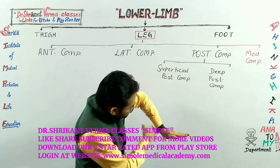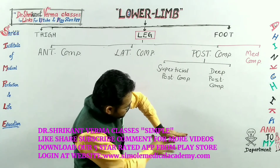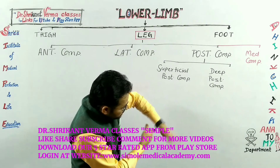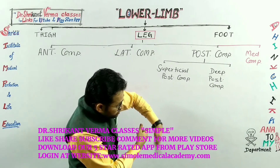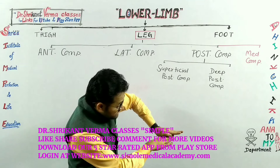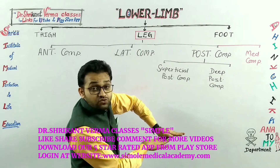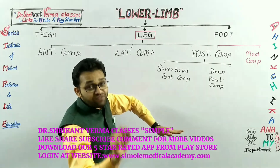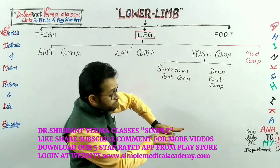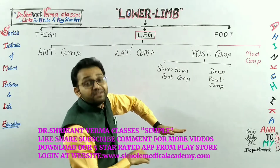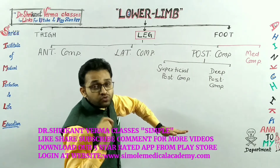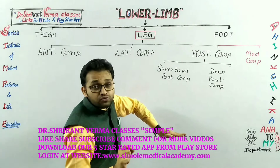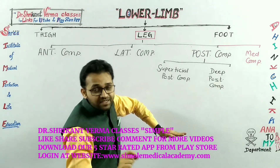The muscles of the posterior compartment, when they contract, will pull the foot downward. So the plantar angle is getting decreased. That is why this is known as plantar flexion, or simply flexion. That is why the muscles of the posterior compartment are also known as flexor muscles, and this compartment is also known as the flexor compartment.